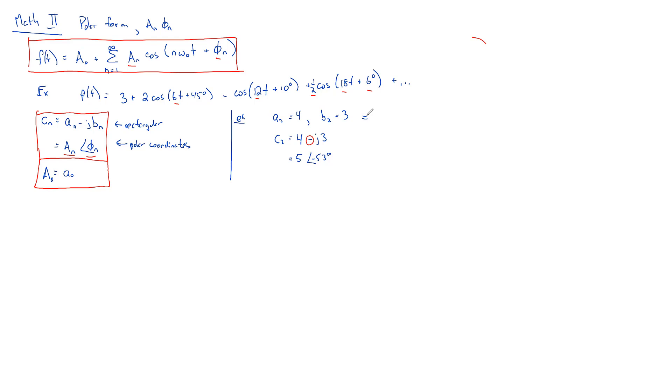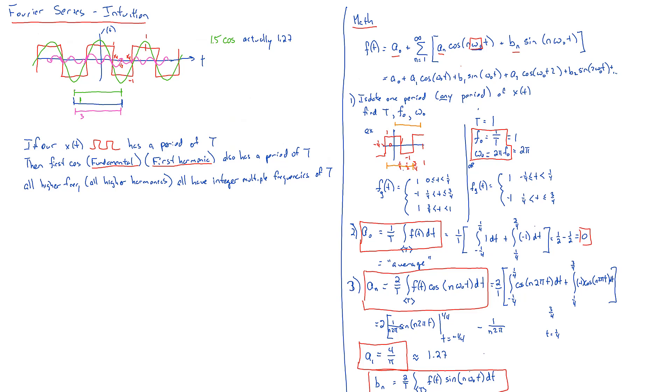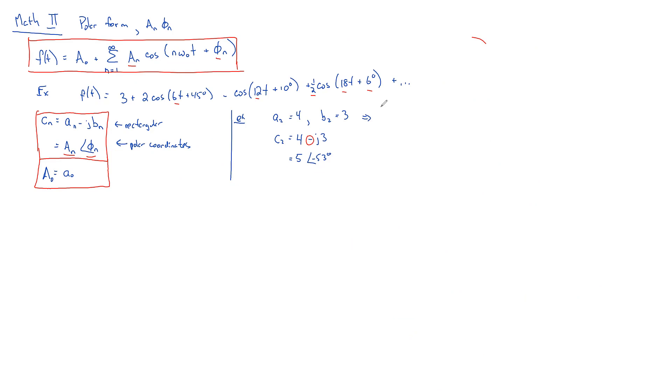And so this means that you've got a corresponding harmonic that looks like 4 cosine of 2 omega naught T plus 3 sine 2 omega naught T.